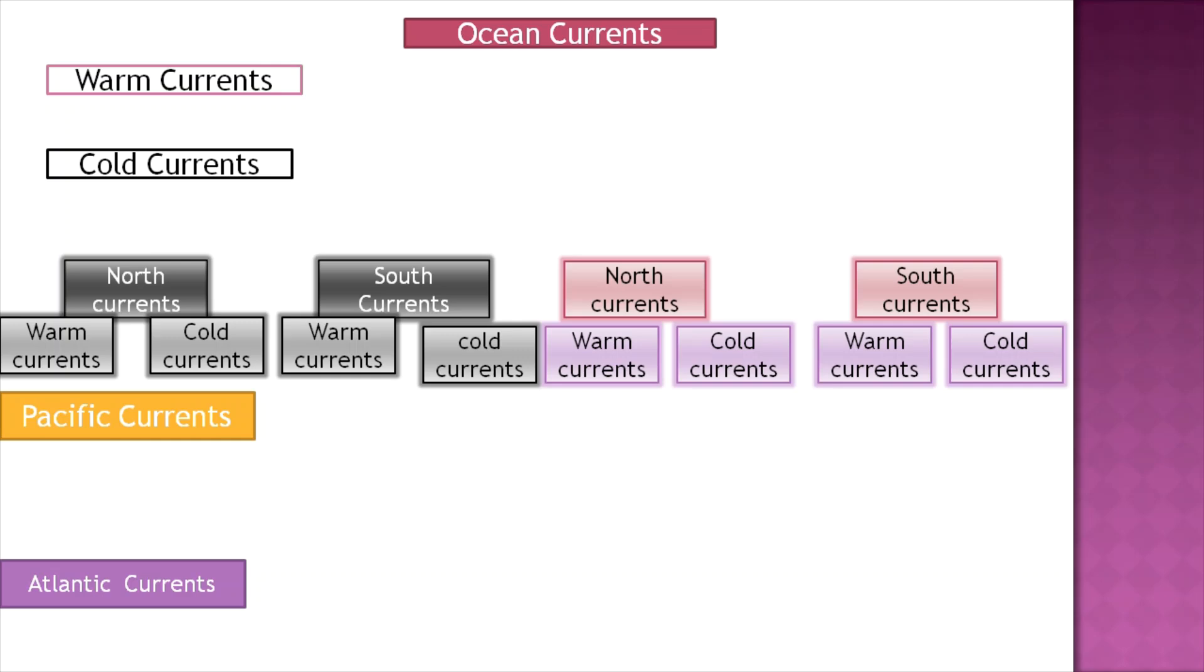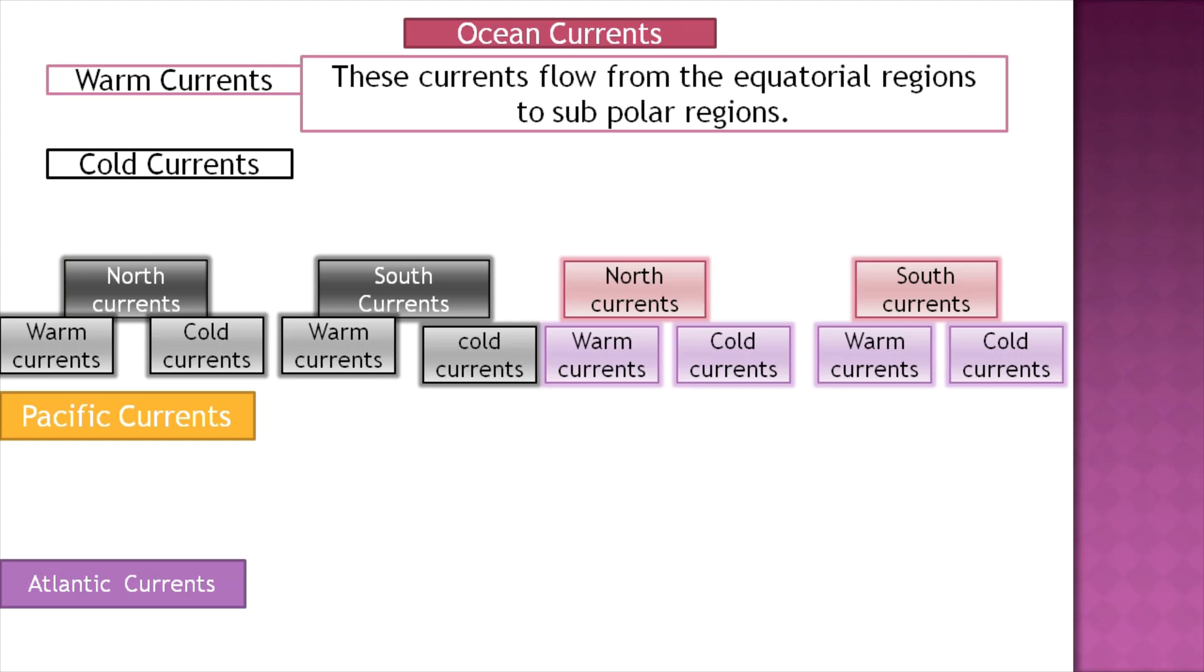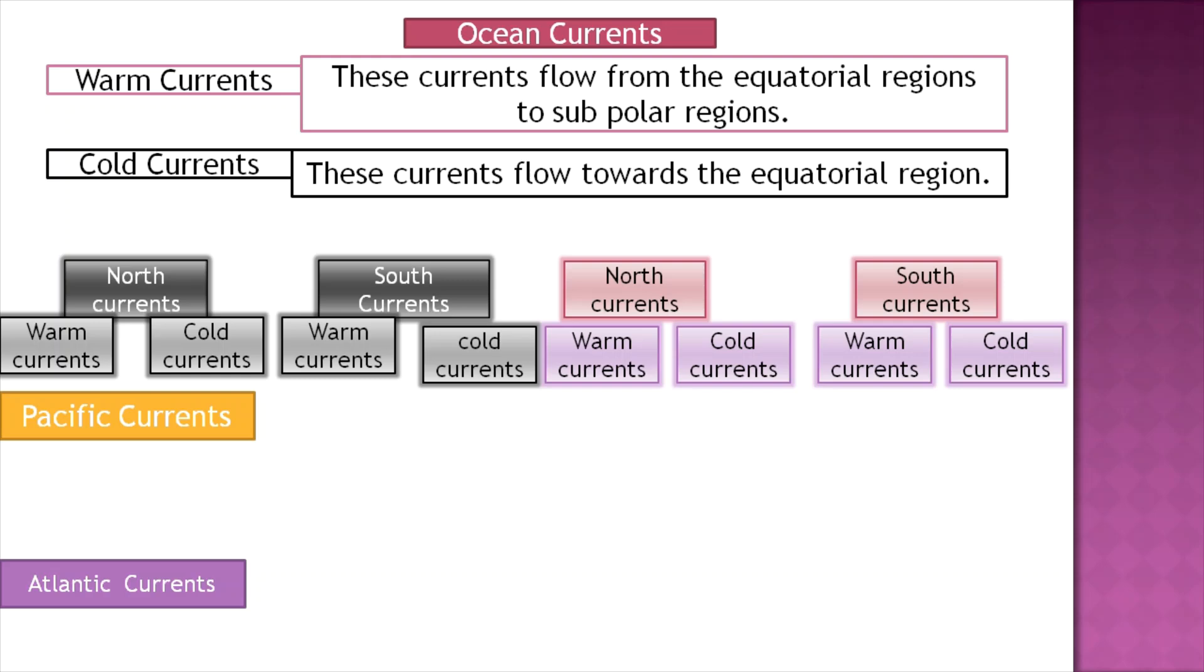Ocean currents include warm currents and cold currents. Warm currents flow from the equatorial region to the subpolar region. Cold currents flow towards the equatorial region. We find Pacific Ocean currents with north and south variations.